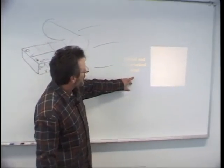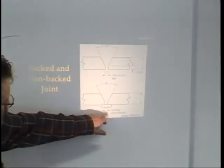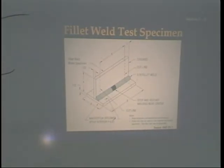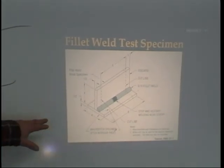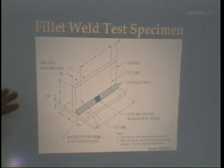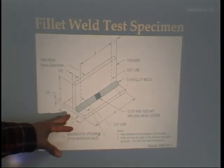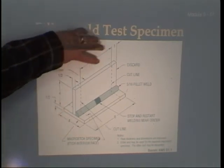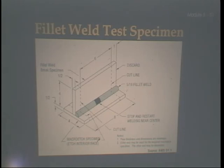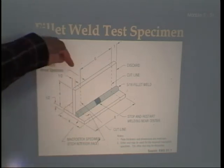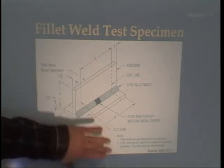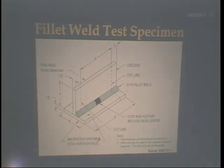Here's a slide showing backed and non-backed joints: an open root with 1/8 inch root opening, and one with a backing strip. This is a fillet weld specimen — eight inches long for a fillet weld test with a start and stop in the center. When done, we inspect it visually. Then we cut an inch off each end and do a macro etch examination, sanding it smooth and pouring acid on it to see how far the weld fused into the parent metal. The remaining six inches get a fillet weld break test to examine the root for good penetration.